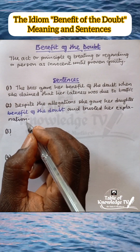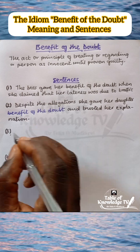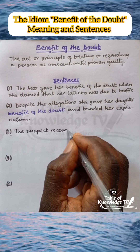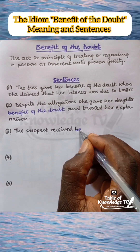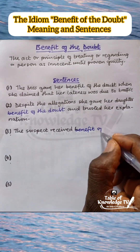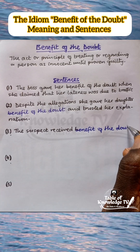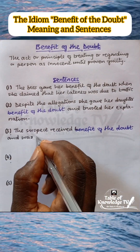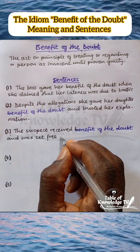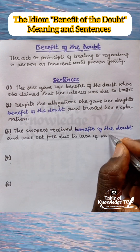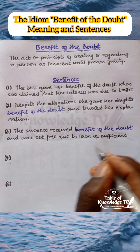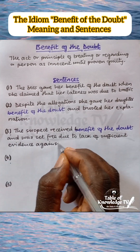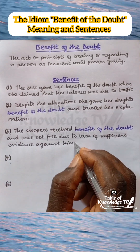Sentence 3: The suspect received benefit of the doubt and was set free due to lack of sufficient evidence against him.